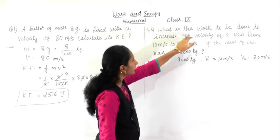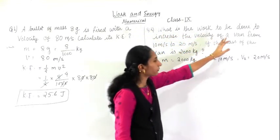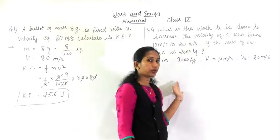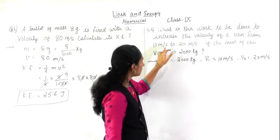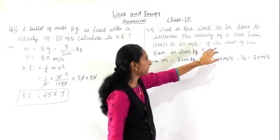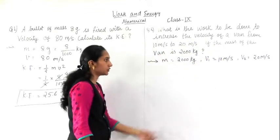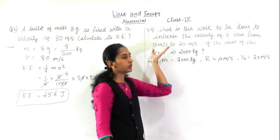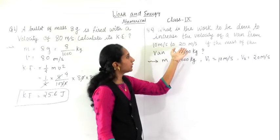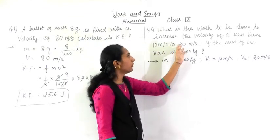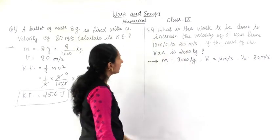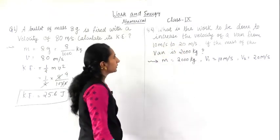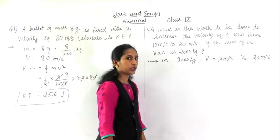Question number 2: what is the work to be done to increase the velocity of a van from 10 meters per second to 20 meters per second, if the mass of the van is 2000 kg? The van is moving at 10 m/s and we need to do some work on it so that it moves at 20 m/s. We have to find that work.